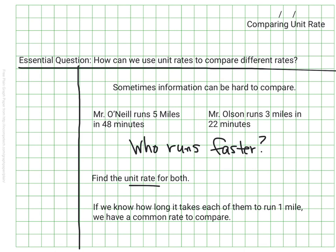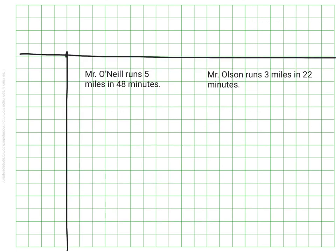It'll be much more friendly. So let's find the unit rate for Mr. O'Neill and Mr. Olson and we'll see who ends up being faster. I'm going to start with Mr. O'Neill, and to find the unit rate I'm going to use proportions or equivalent ratios that are set up as fractions.